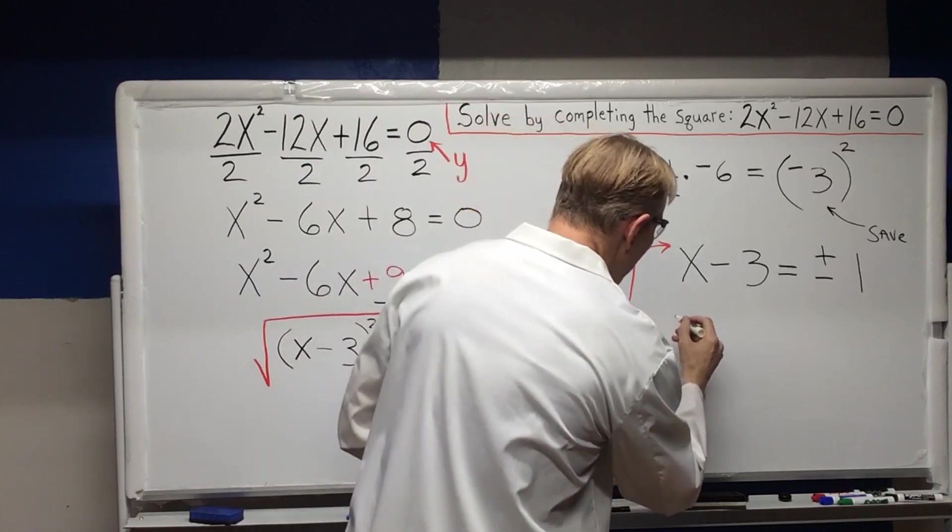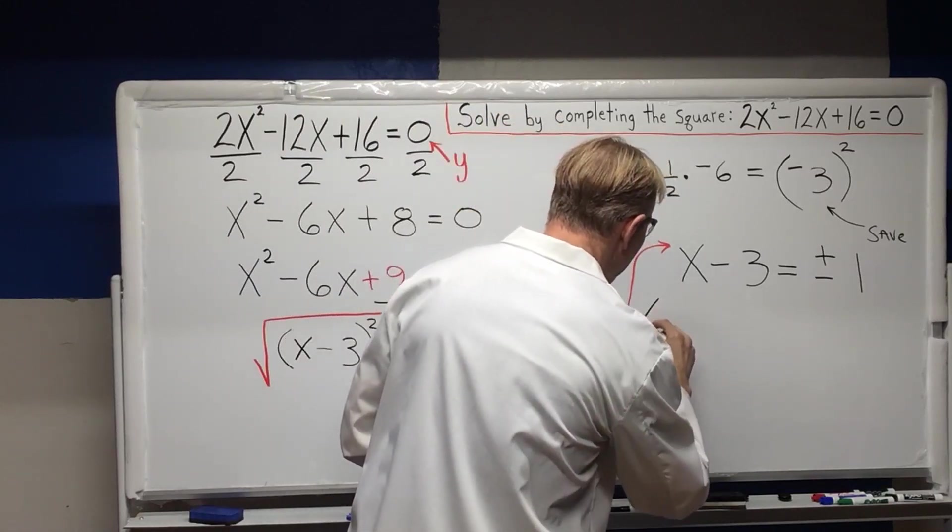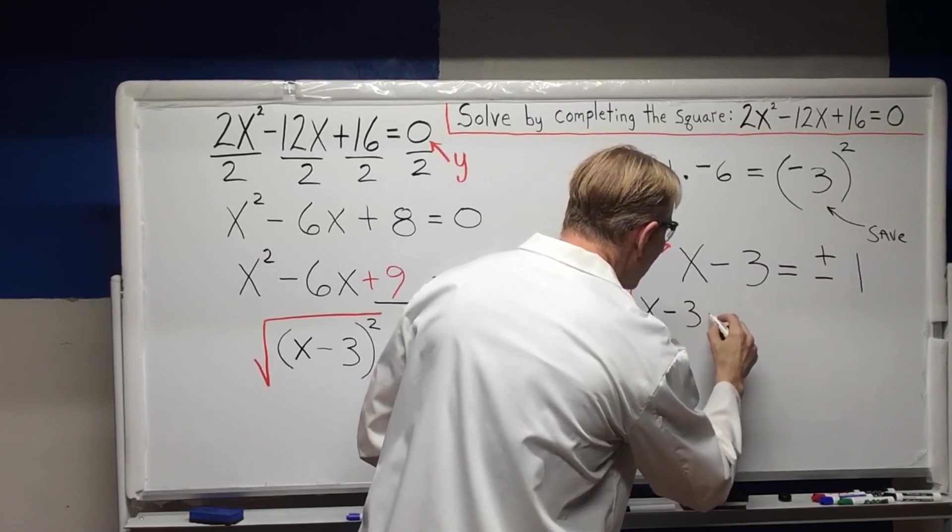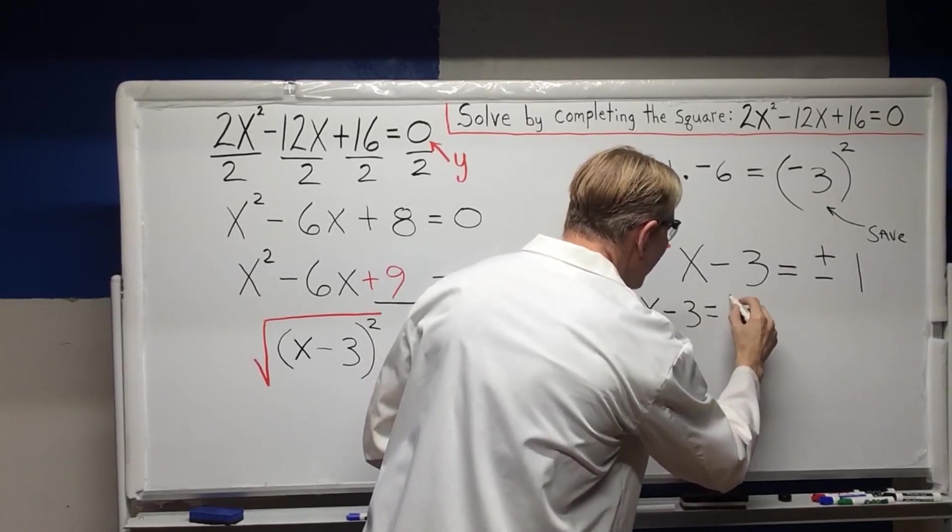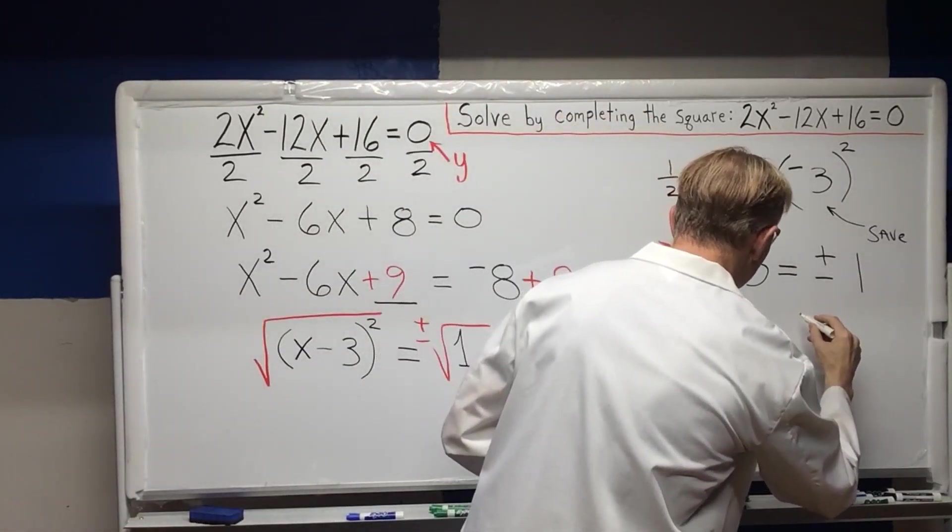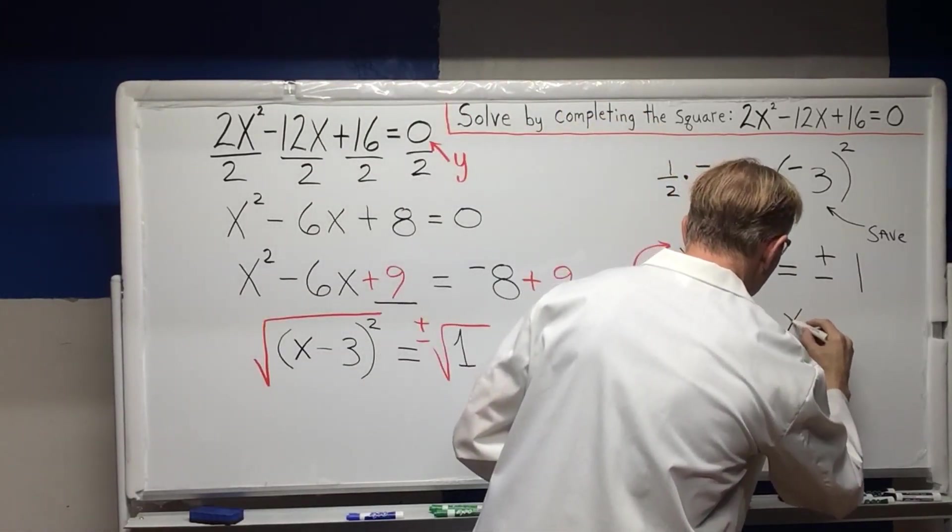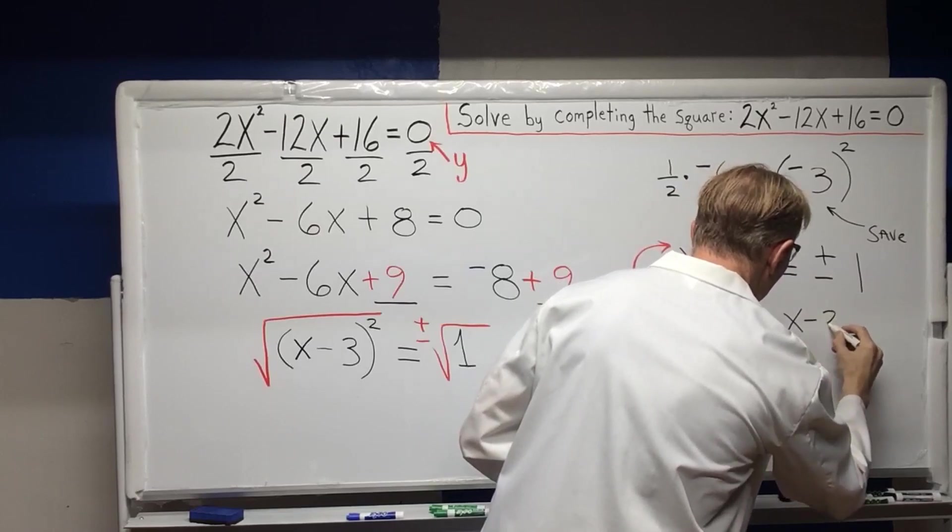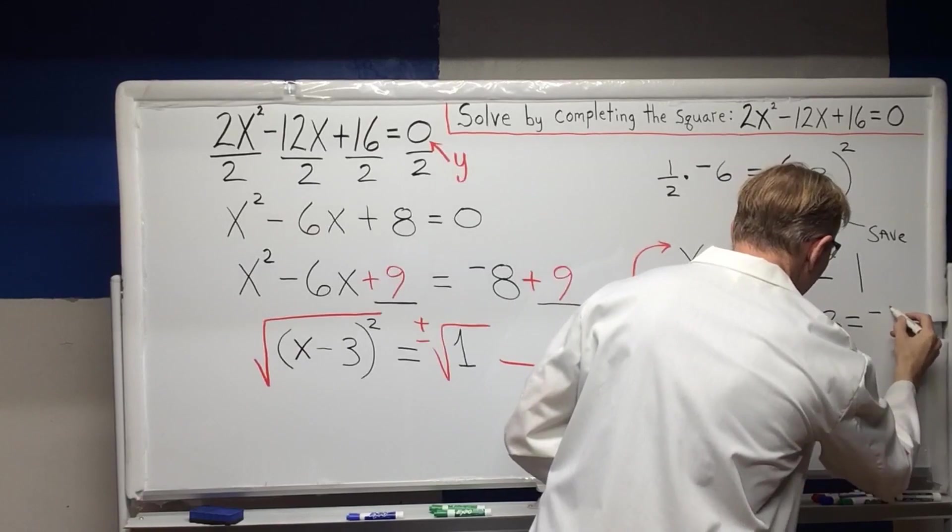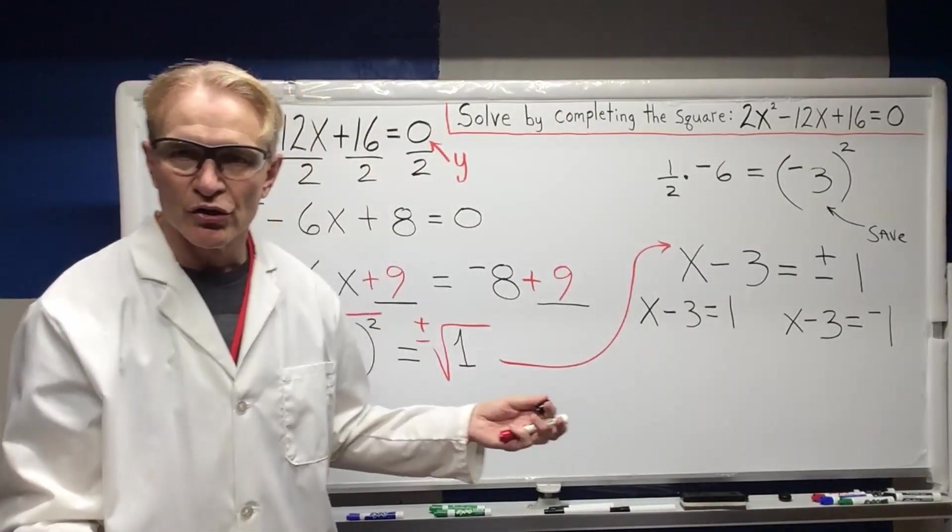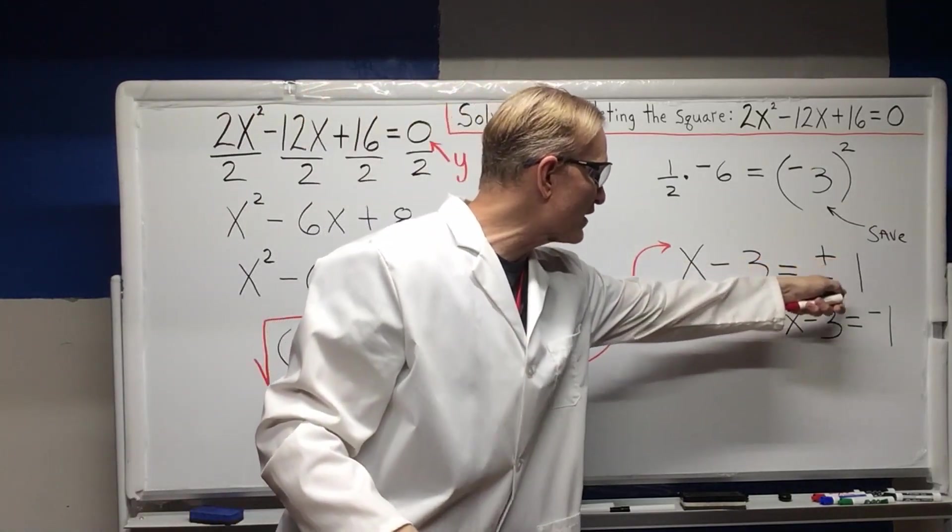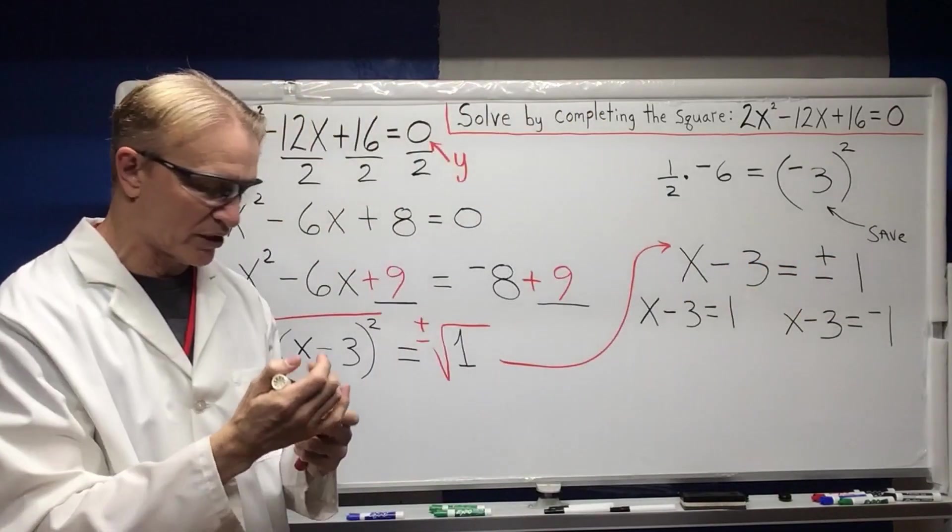I would make it X minus 3 equals 1 and X minus 3 equals negative 1. Notice there's two problems going here that we're solving for. X minus 3 equals positive 1. X minus 3 equals negative 1.